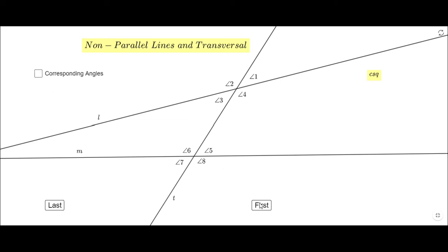The last set of angles are called corresponding angles. These have one interior and one exterior angle on the same side of transversal T. So the pairs are one and five, two and six, three and seven, and four and eight. This is the only type where we have four different pairs of corresponding angles.